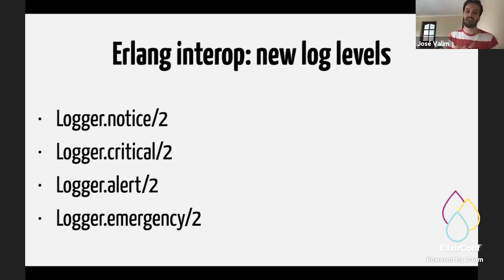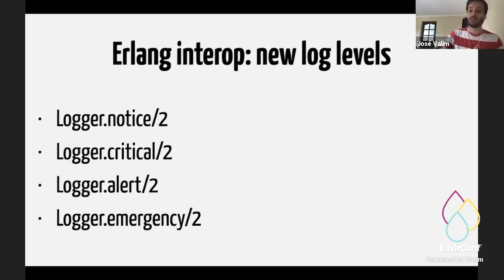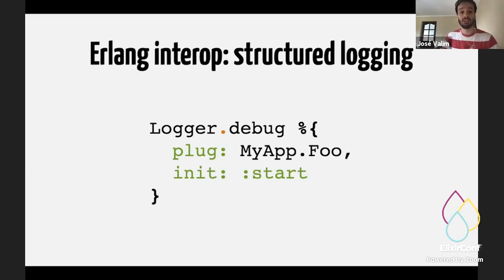One caveat here is that if you use those new levels with the old Elixir backends, they're going to translate to some of the existing levels. For example, if you use critical, it's actually going to come out as error if you have an old logger backend, because of backwards compatibility reasons. But there will be ways to extract this information if you want to. Another area we are integrating better with Erlang's logger is that we now support structured logging as well. You can log a map or a keyword list, not just strings.